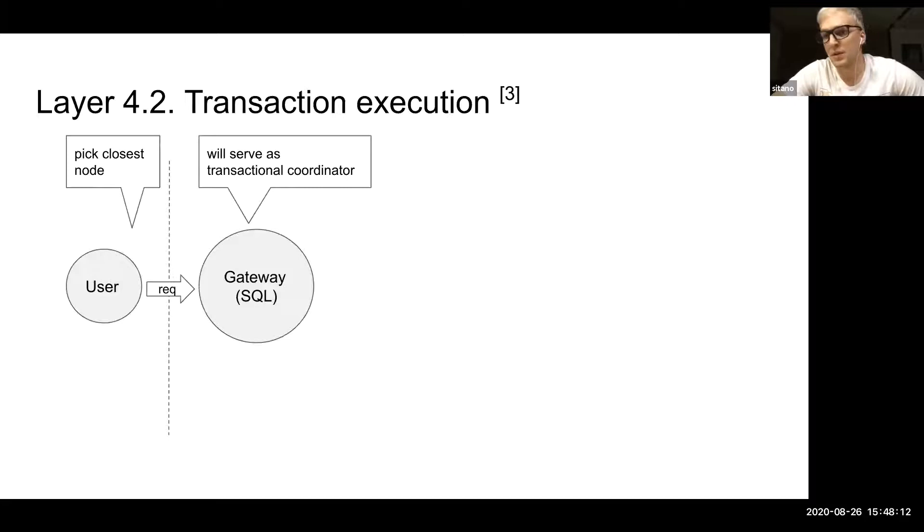Now let's take a look at how the transactional execution works. Basically, as everywhere else, this is very similar to the two-phase commit, but in their case they are optimized to be a parallel commit. The parallel commit consists of two parts: the pipelining of the operations and the parallel commit itself. So let's take a look how it looks.